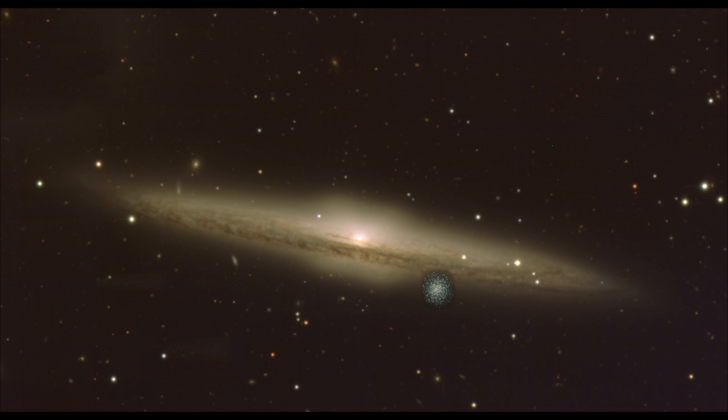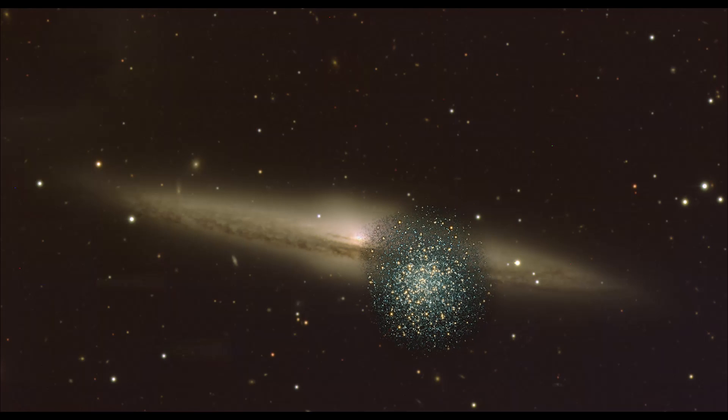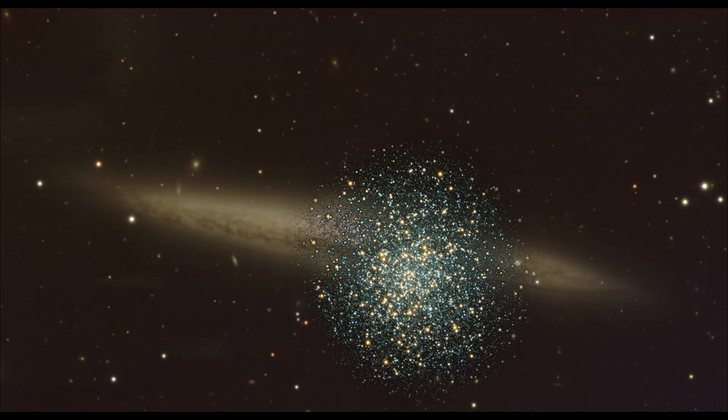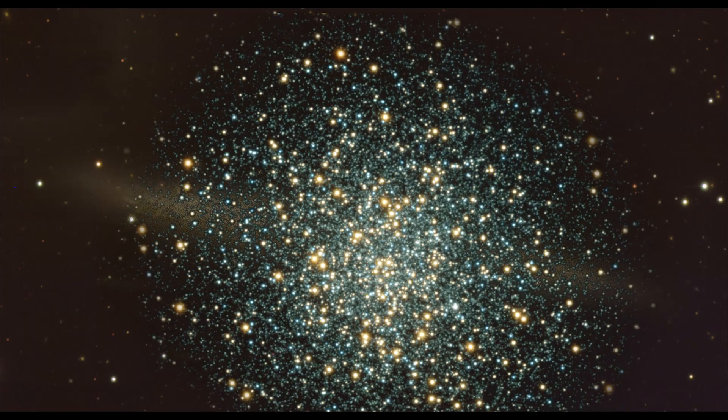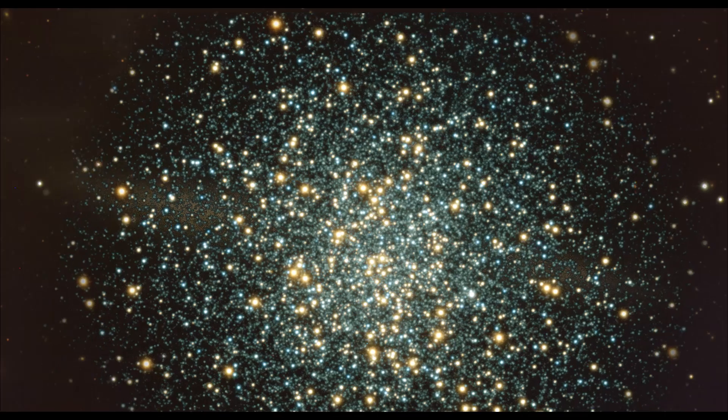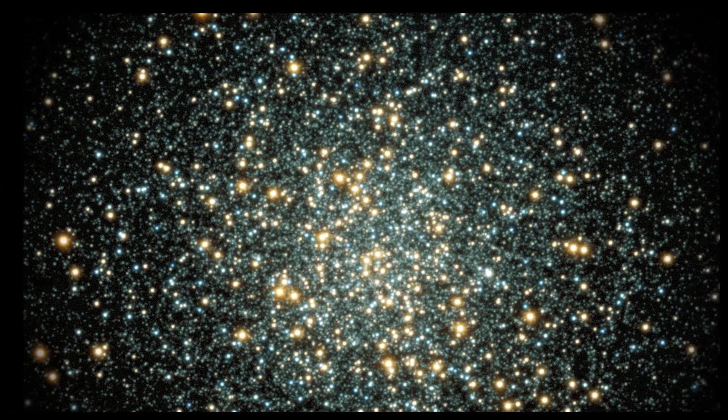Globular clusters are dense stellar systems bound by their own self-gravity. The number of stars in typical globular clusters range from tens of thousands to hundreds of thousands, even up to a few million for the most massive systems.